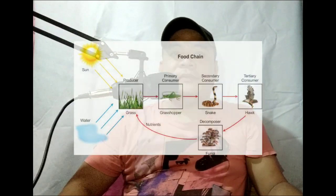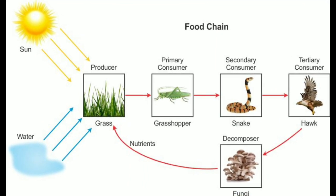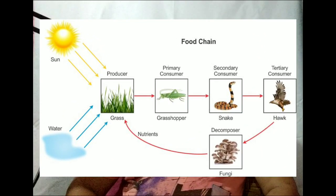All food chains begin with green plants, or the producers. The grass, or producer, constitutes the first trophic level. The grasshopper, which is the primary consumer that feeds on plants, constitutes the second trophic level. The carnivore, which is the snake, is the secondary consumer and constitutes the third trophic level. Finally, the large carnivore, which is the hawk — also called the top carnivore or tertiary consumer — forms the fourth trophic level. The large carnivore dies and becomes feed for the decomposer. The decomposer feeds on these dead animals and plants.